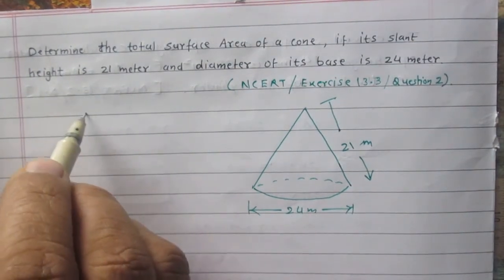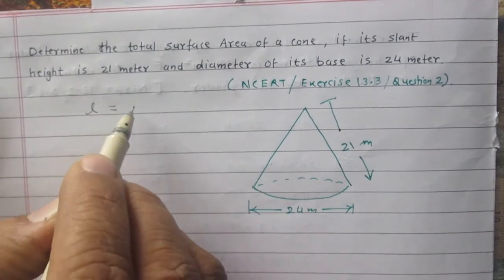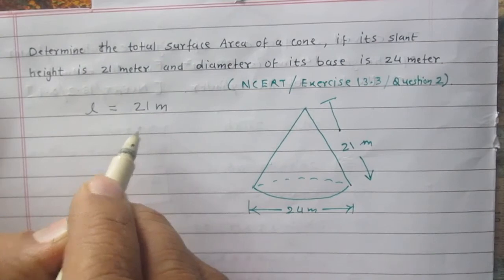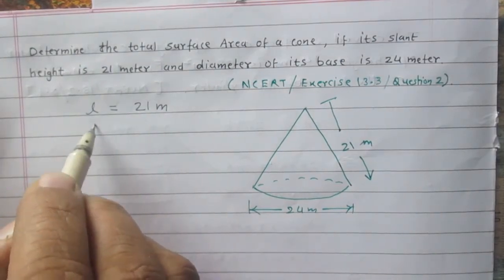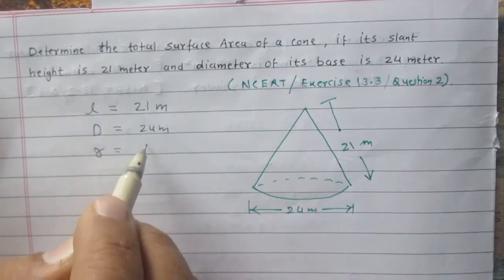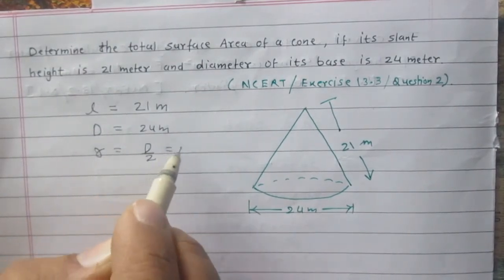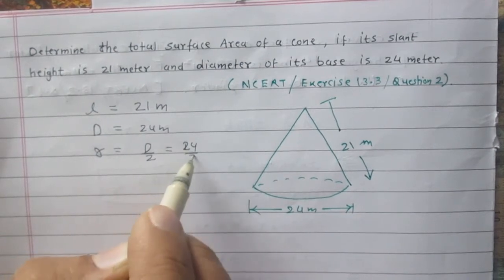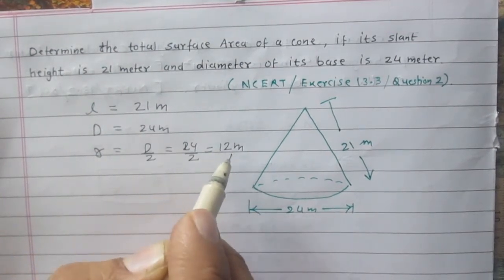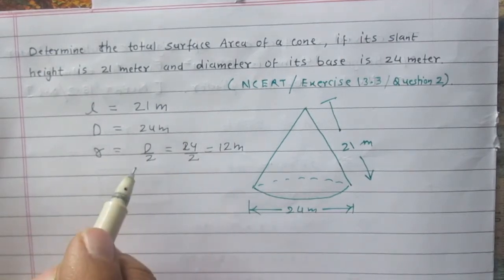Let us consider L stands for the slant height, this is 21m, and diameter of the base is 24m. Radius is half of the diameter, so we can say that it is 24 divided by 2 which is 12. So radius of the base is 12m.